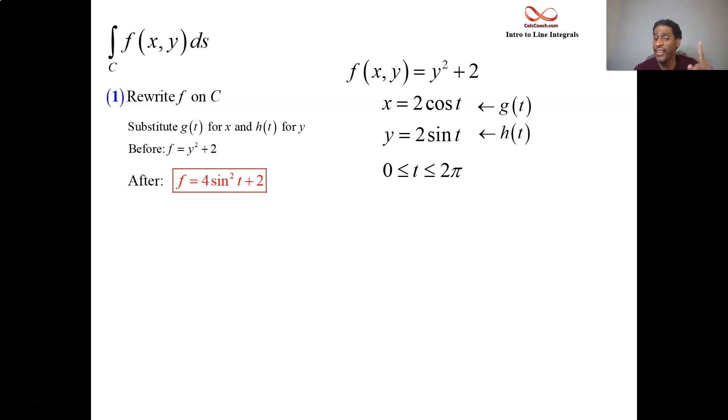So after getting that, your next step should be then to be able to write an expression for ds and here's the formula for it. So we take derivatives. We have x and y so we take x prime and y prime or g prime and h prime.